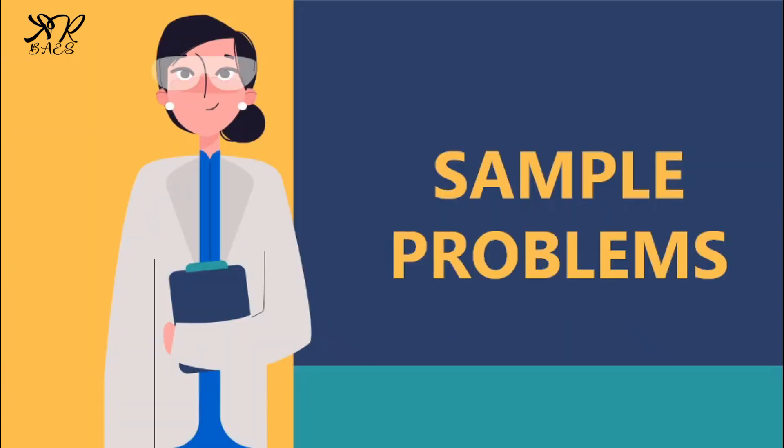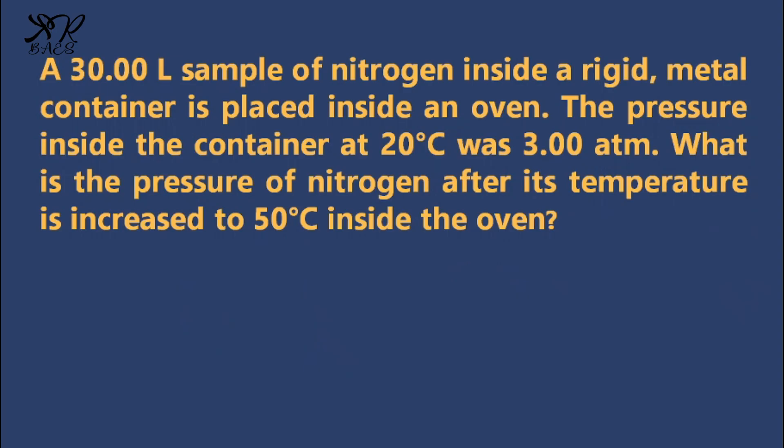Since we already know the different formulas that we can use, we can now solve the following problems. Sample problem number 1: a 30-liter sample of nitrogen inside a rigid metal container is placed inside an oven. The pressure inside the container at 20 degrees Celsius was 3 atmosphere. What is the pressure of nitrogen after its temperature is increased to 50 degrees Celsius inside the oven?